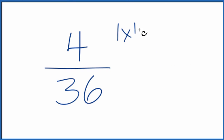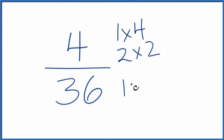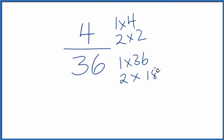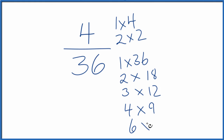For 4, the factors are: 1 times 4 equals 4, and 2 times 2 equals 4. For 36, we have 1 times 36, 2 times 18, 3 times 12, 4 times 9, and 6 times 6. The greatest common factor between the numerator and the denominator is 4.